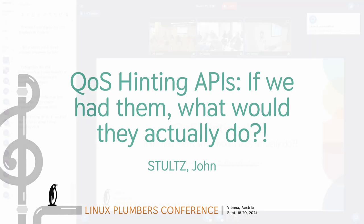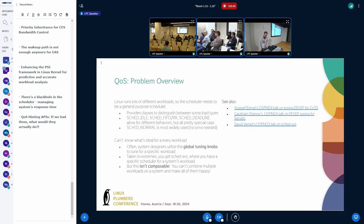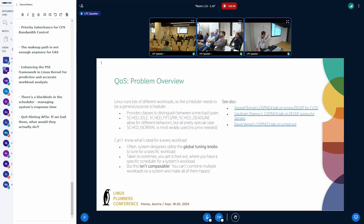Hey everybody, I'm John Stoltz. I just wanted to cover some discussions around QoS — quality of service hinting — and step back a little to make sure we have a sense of what we actually want out of these. As a quick problem overview, Linux obviously handles a ton of different workloads. For the most part they use sched_normal, though we do have sched_deadline and sched_idle to provide other classes.